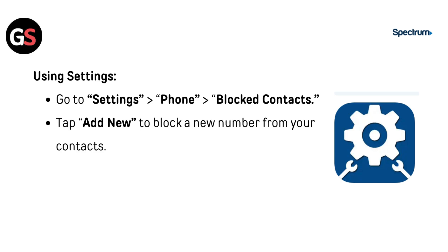Using Settings, go to Settings, then Phone, then go to Blocked Contacts. Tap Add New to block a number from your contacts.